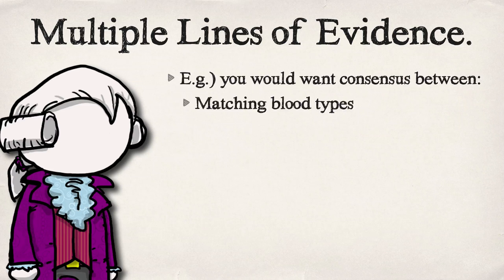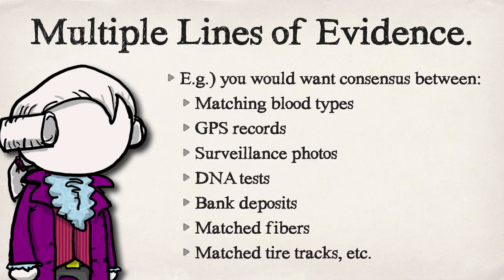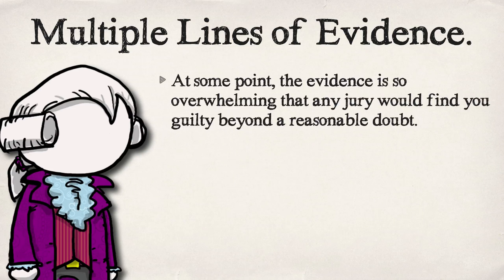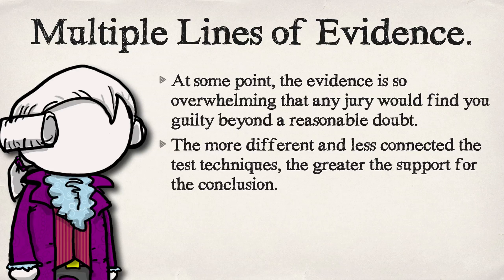Instead of just blood types, look at all this other stuff you could rack up to tie someone to the scene of the crime — all these things could tie, for instance, me to a bank robbery. At some point if you don't just have my blood type but also phone records and the GPS from my car all tying me to the bank, it would be very easy for you to get a jury to convict me beyond a reasonable doubt. The equivalent in science is that overwhelming evidence where to argue against it would be intellectually indefensible.